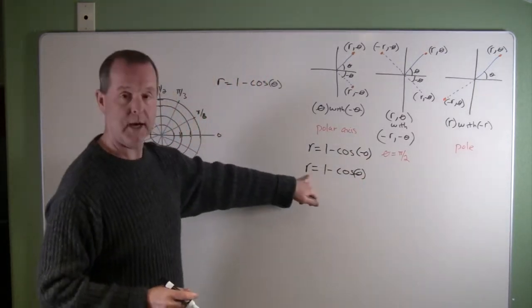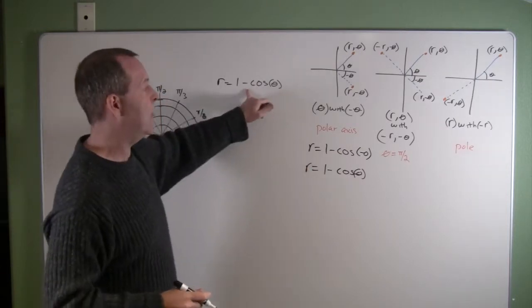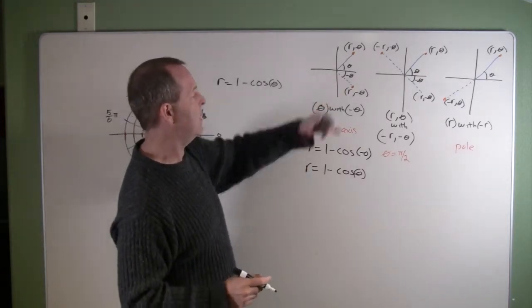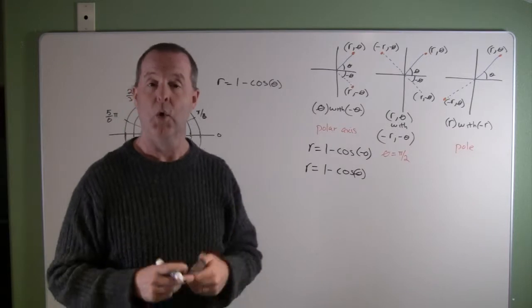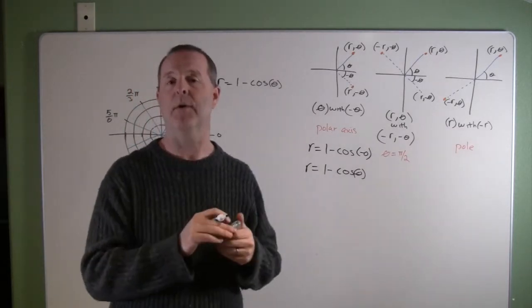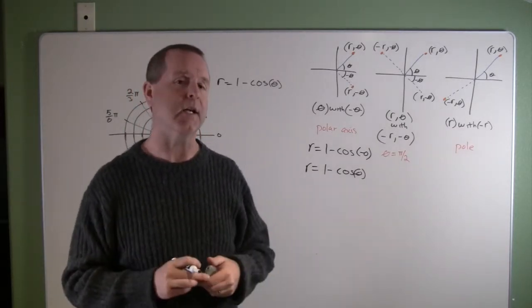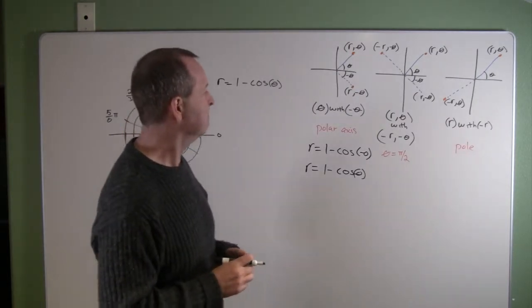And there we see that's the same equation that I have to begin with. So I know that I have symmetry about the polar axis, which helps me reduce the number of points I could plot or should plot to get a good idea what the graph looks like.